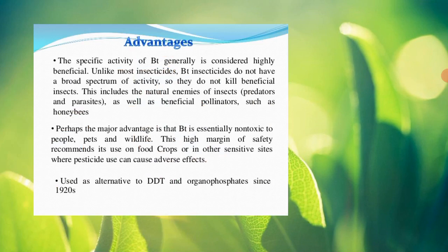Second, and perhaps the major advantage, is that Bt toxin is non-toxic to humans, pets, and wildlife. Chemical pesticides affect wildlife, animals, pets, and even humans, but this is not the case with Bt toxins. Third, it has been used since the 1920s as an alternative to DDT and organophosphates, which are chemical insecticides. Bt toxins have replaced these harmful chemicals and have been continuously used ever since. This is a very useful and efficient method for controlling plant diseases by producing disease-resistant plants.